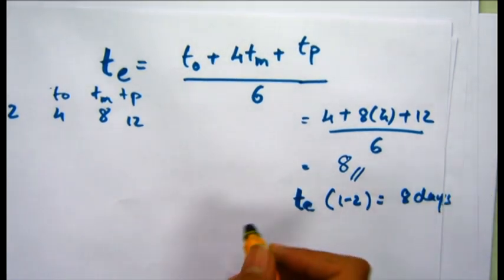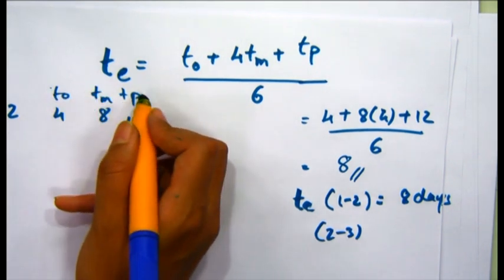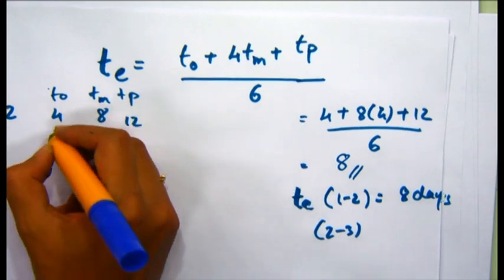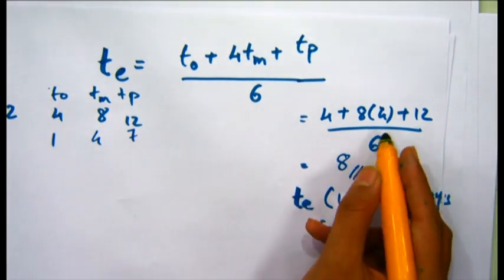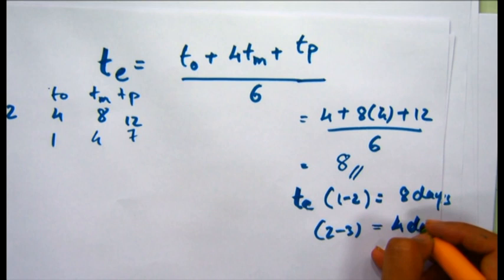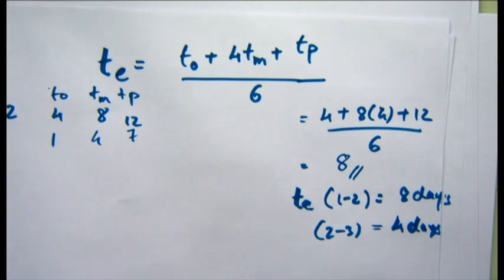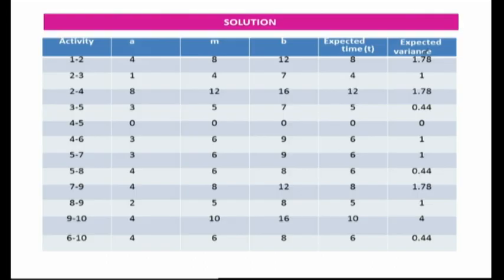Similarly, for activity (2,3) with optimistic time 1, most likely time 4, and pessimistic time 7, putting these values in the formula gives an estimated time of 4 days. We calculate estimated times for all activities in the same way, as shown in the table. The 5th column of the table shows the expected time t_e for each activity from (1,2) through (6,10).